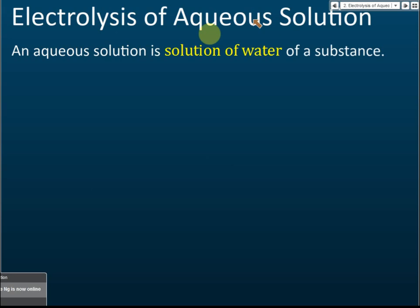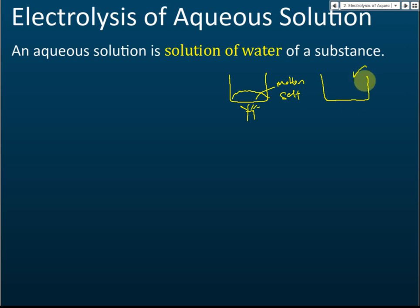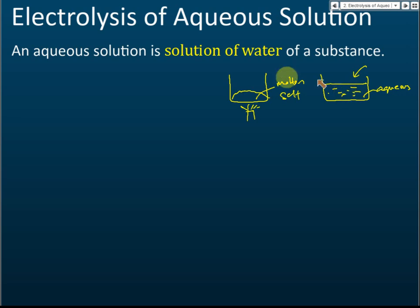Electrolysis of aqueous solutions — an aqueous solution is a solution of a substance in water. If you have a salt and you heat it until it melts, it becomes a molten salt. But if you add water to the salt, the salt dissolves in water and that becomes an aqueous solution. When a soluble substance dissolves in water, it forms an aqueous solution.